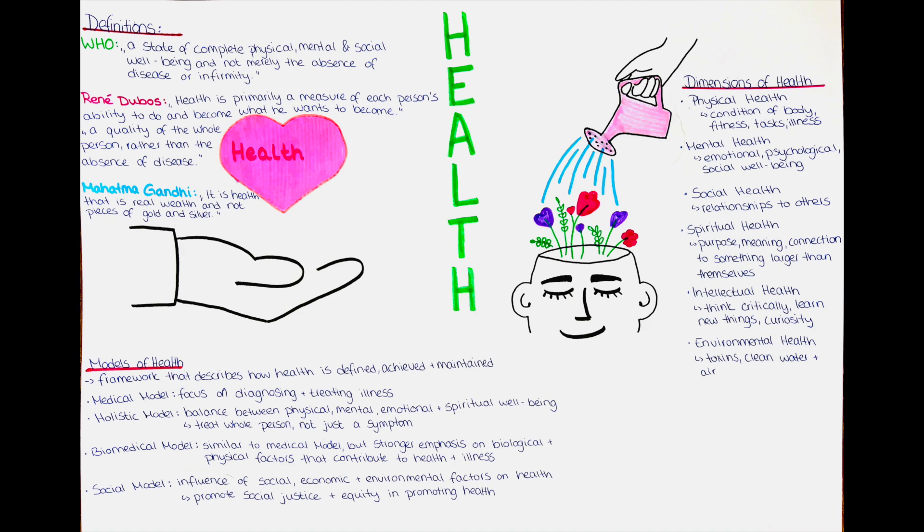We need models of health because they provide a way to conceptualize and understand health and illness and guide us in developing effective interventions and policies to improve health outcomes. They help us identify the factors that contribute to good health and the strategies that can be used to prevent illness and promote well-being. By providing a framework for understanding the complex interactions between individuals and their social and physical environments, models of health can inform public health initiatives and help design interventions tailored to the specific needs of different communities and populations. They also help to promote a more comprehensive and holistic approach, recognizing the importance of addressing social, economic and environmental factors in addition to medical interventions.